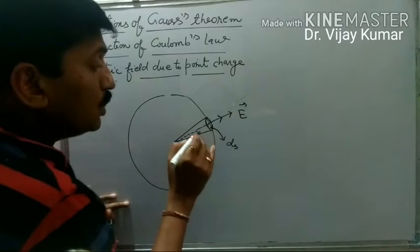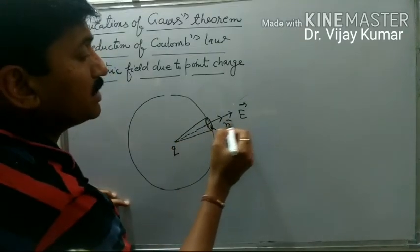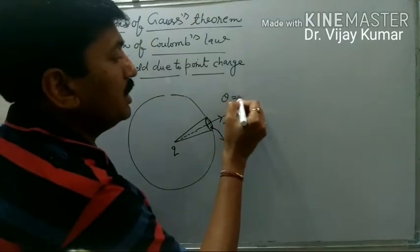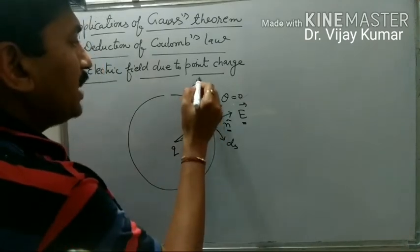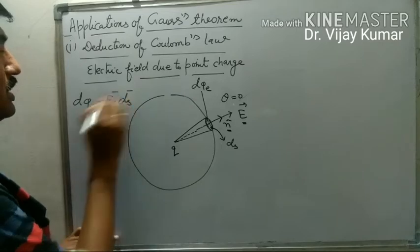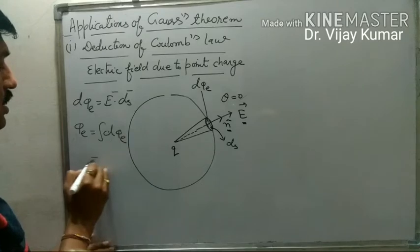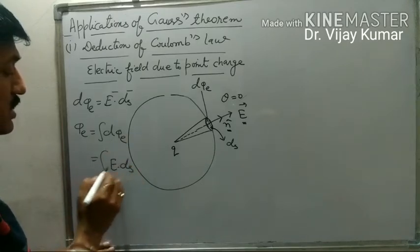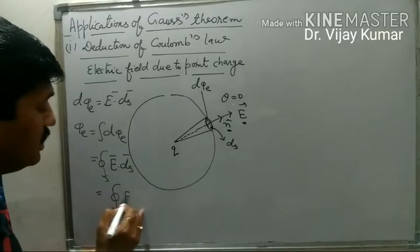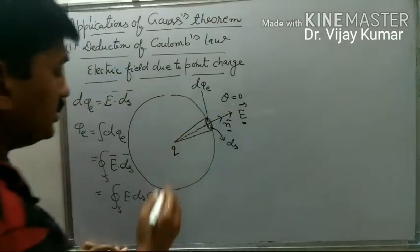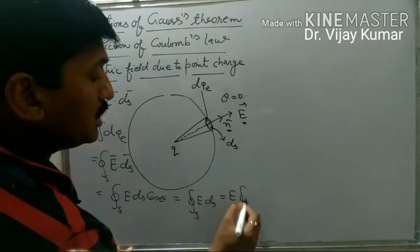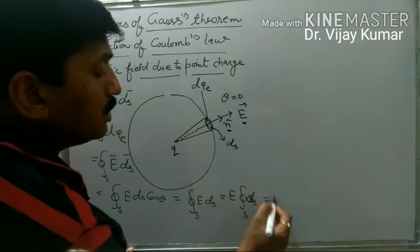The electric field due to this charge particle is in this direction, and we know that the unit vector is also perpendicular to this surface. The direction of the unit vector and electric field are the same, so the angle between them is zero. The electric flux passing through this small surface is d phi e, and d phi e equals E dot ds. So phi e is the surface integration of E dot ds, which equals E ds cos theta. Since theta is zero, this becomes the integration of E ds.